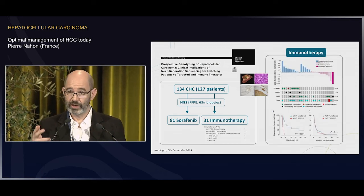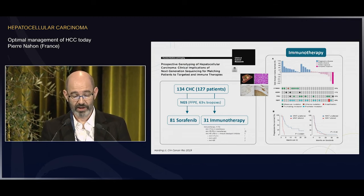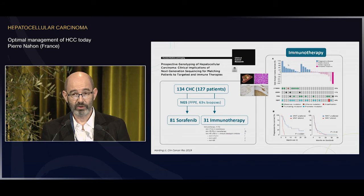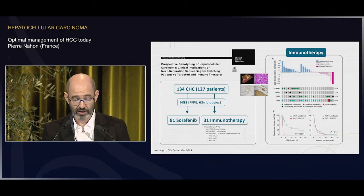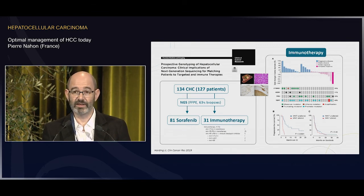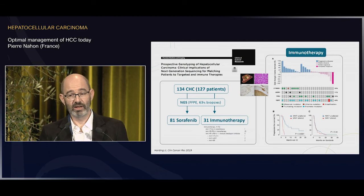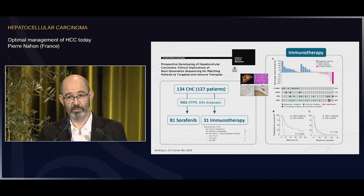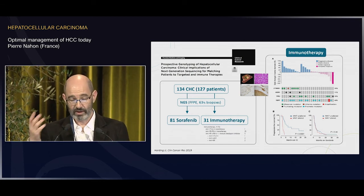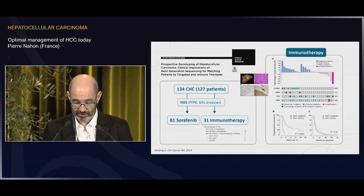The same goes with immunotherapy — on the waterfall plot, patients who did not respond to immunotherapy, noting that only 20 to 25 percent of patients will respond, most had mutations in beta-catenin. This provides a first clue to identify patients who have no chance of responding to this very expensive treatment, and is another step toward a more precision medicine decision-making process.